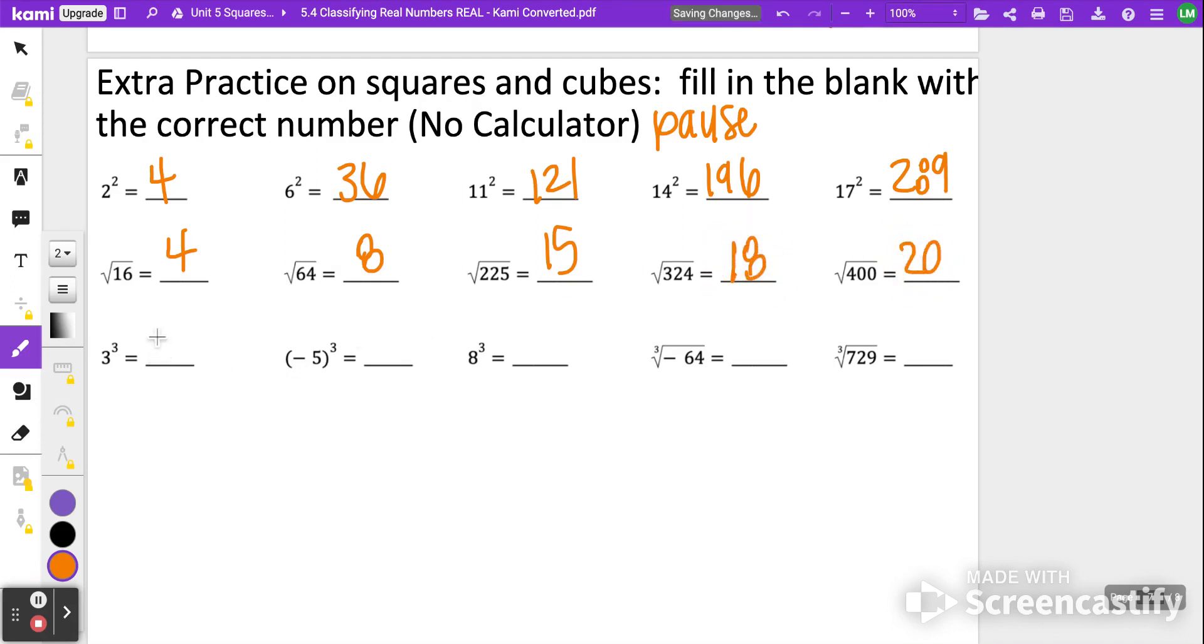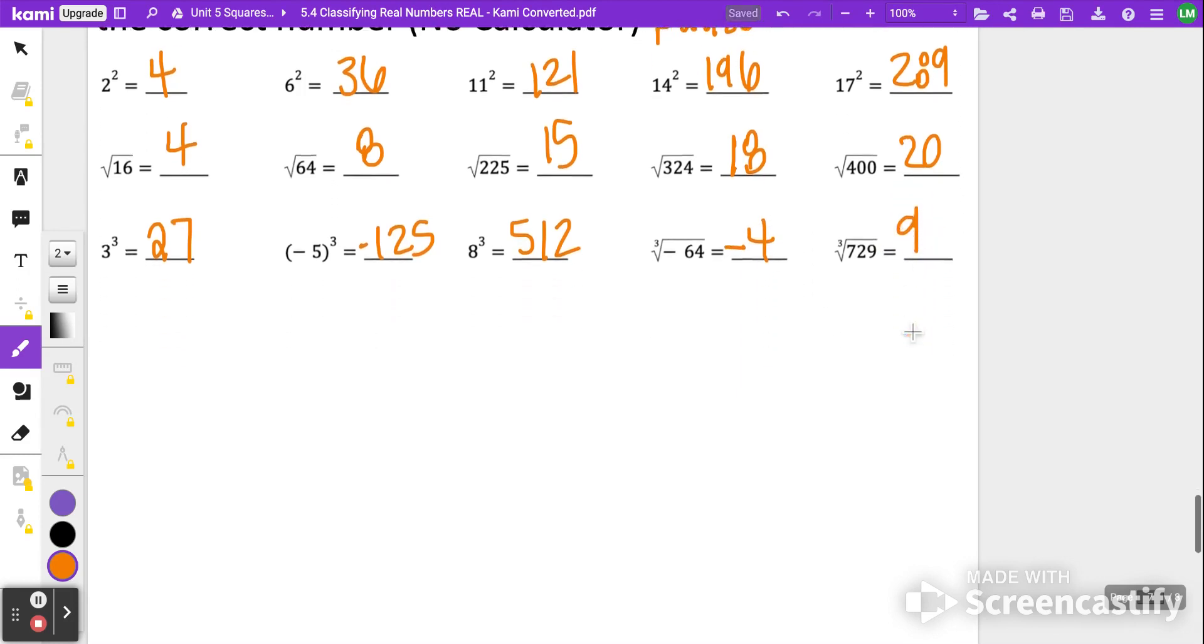3 cubed is going to be 27. Negative 5 cubed, that's like saying negative 5 times negative 5 times negative 5, that should give us a negative 125. We've got 8 cubed, which is 512. Then we have the cube root of negative 64, that's negative 4. And then the cube root of 729 is equal to 9. So those are just a few practice questions that we had.